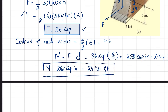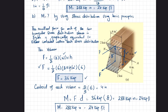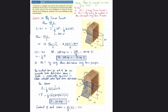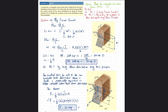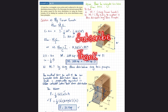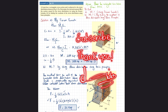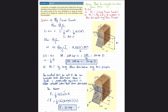The moment is 288 kip·inch equals 24 kip·ft — the same values obtained by both methods. This was all about example 6.11. If you are new to my channel, please subscribe and press the bell icon to get notifications about my latest videos. If you have any questions, ask in the comment section. Thank you.